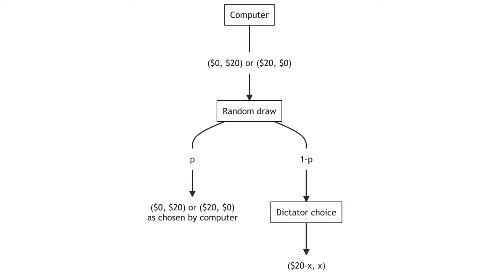The computer's allocation is then implemented with probability P. Otherwise, the dictator's allocation is made. The probability is known to both the dictator and receiver. If the dictator's choice is to be implemented, the dictator makes a split of the $20 offering X to the receiver. The receiver learns only the allocation. They do not learn the dictator's choice.